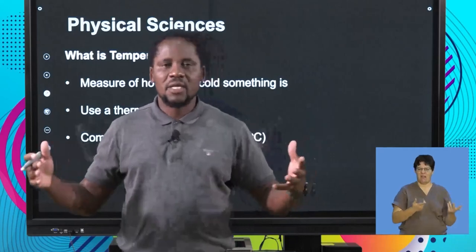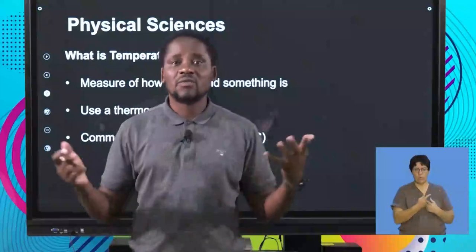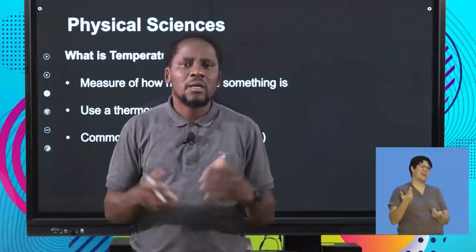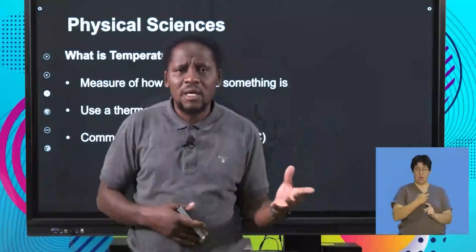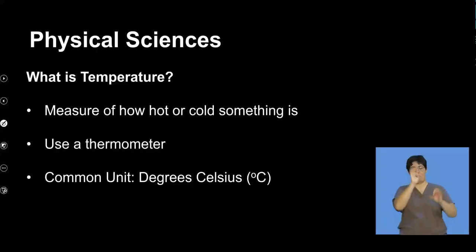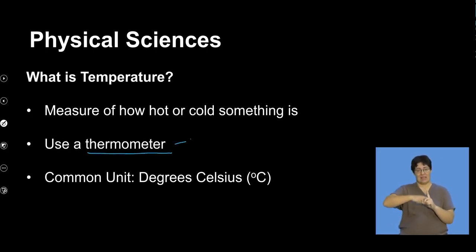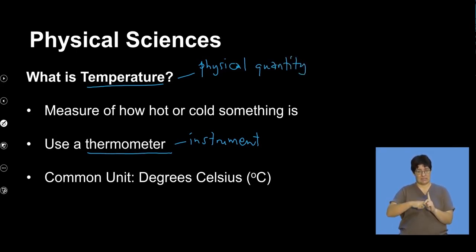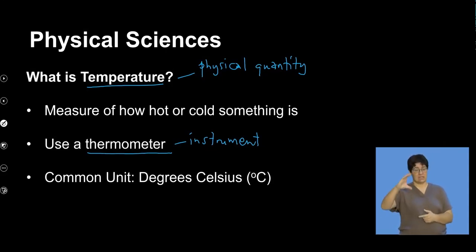Temperature is a physical quantity — something we can measure. We explored this when we did the heating curve of water to understand how temperature changes. Temperature indicates how hot or cold something is, and we use a thermometer to measure it. The thermometer is the instrument for measuring temperature, while temperature itself is the physical quantity. Common units include degrees Celsius and Kelvin.